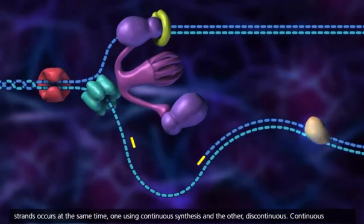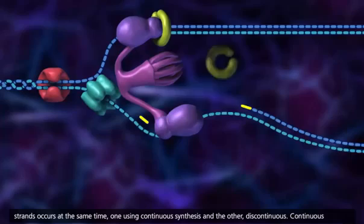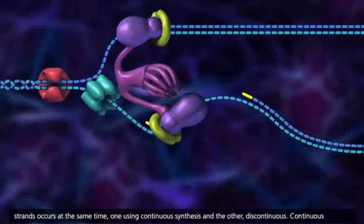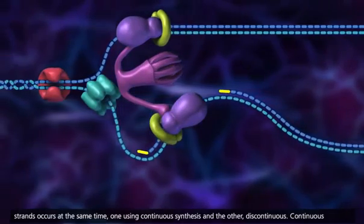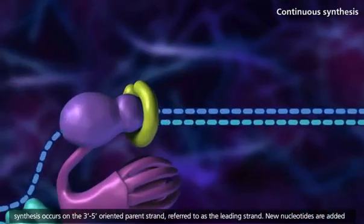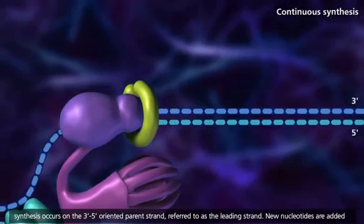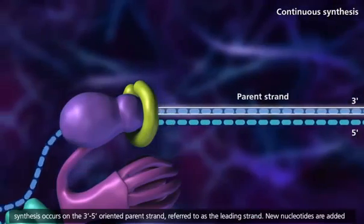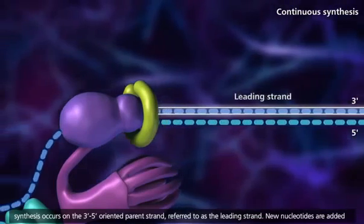Replication of both strands occurs at the same time, one using continuous synthesis and the other discontinuous. Continuous synthesis occurs on the 3' to 5' oriented parent strand, referred to as the leading strand.